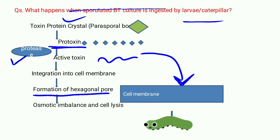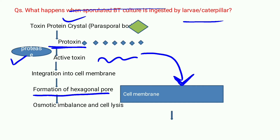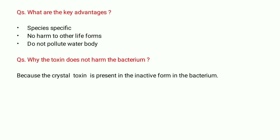This causes cell lysis. As soon as cell lysis takes place in the cell membrane, it leads to the death of the insect. We don't want the insect to destroy our crop, so this is how the BT toxin helps to kill the insect that is destroying our crop. This is the whole mechanism of how BT toxin works once ingested by the insect.